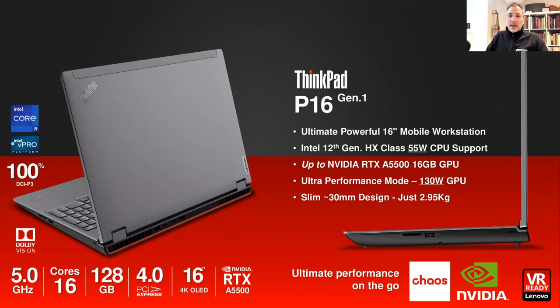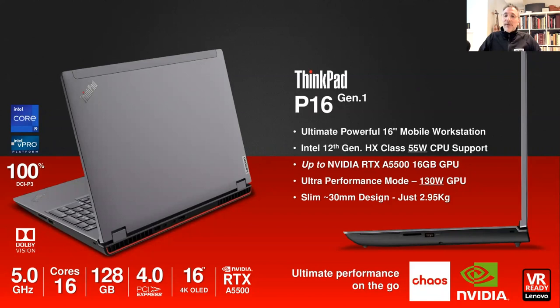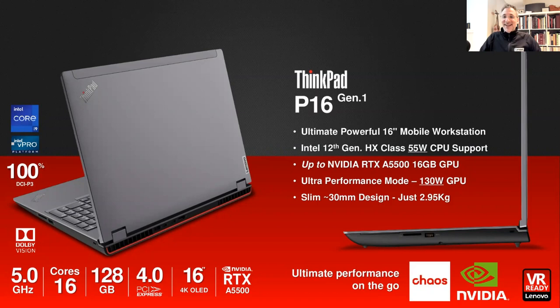Now let's look at the P16 — the first generation of this machine. It's basically desktop performance on the go, performing at about the same level as the P360 Ultra in a mobile form factor. It has 12th gen HX-class processors from Intel and supports up to an RTX A5500 from NVIDIA. Because of its size and power, it runs the GPU more effectively with less thermal throttling. This is the machine we're going to give away — and I think this is the moment we've all been waiting for.